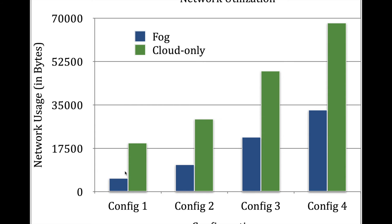Moving to our last graph, which is for network utilization — cloud-based placement consumes more bandwidth since every small piece of data is transmitted over the cloud. In our simulation, whenever a vehicle enters the premises the sensor detects it, the camera captures a picture and sends it to the cloud for image processing, which results in network bandwidth consumption and increased delay and cost. So overall, looking at the code and all the graphs, we can conclude that fog-based placement results in optimal usage of resources at significantly lower cost. Thank you for watching.